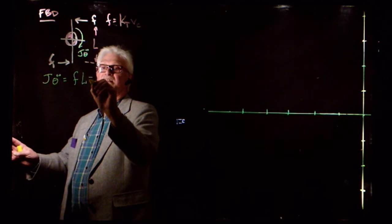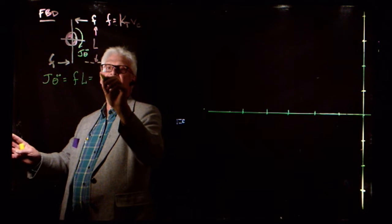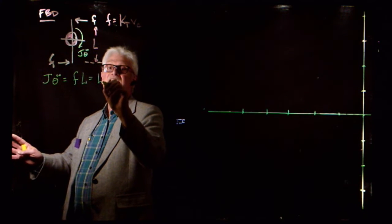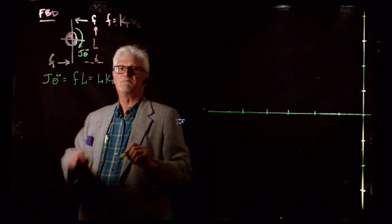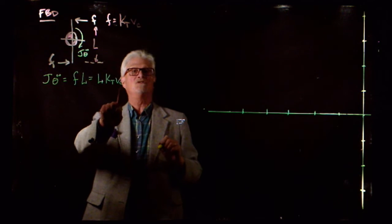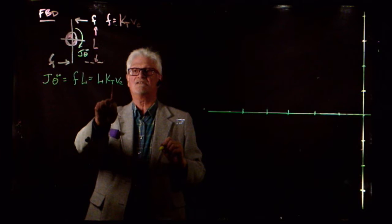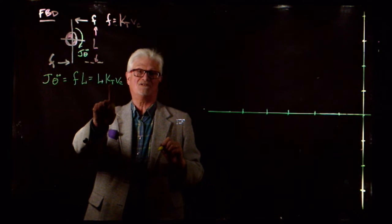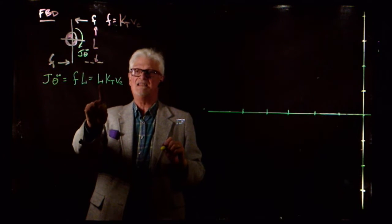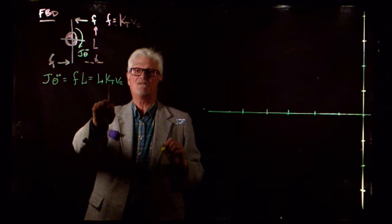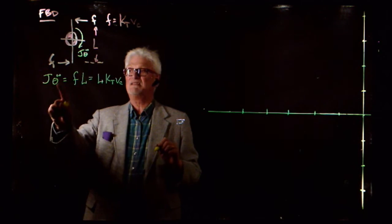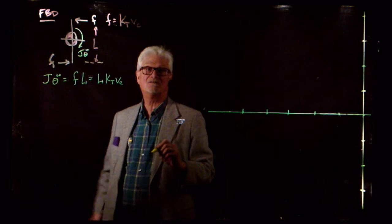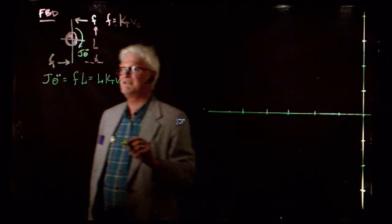F times L is equal to L*K_T times V_C. So I'm going to put a voltage to my actuator — it's going to open up a little nozzle, the thrust constant is going to squirt gas out, and then multiplying by the lever arm gives me the rotational moment of inertia J*theta_double_dot.